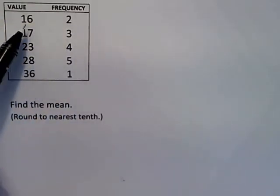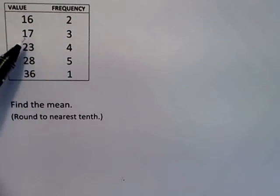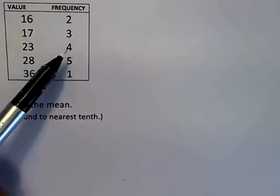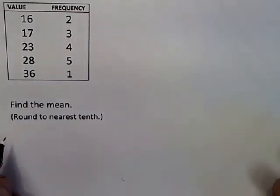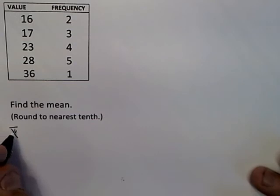So what this really means is you have 16 twice, 17 three times, 23 four times, 28 five times, and 36 one time. So you could actually write this out if you wanted to as x bar is